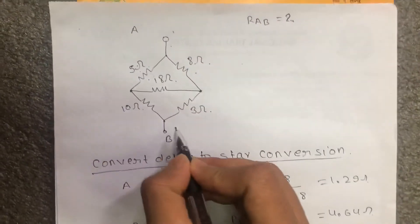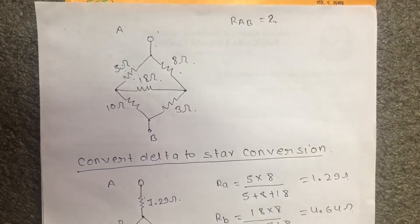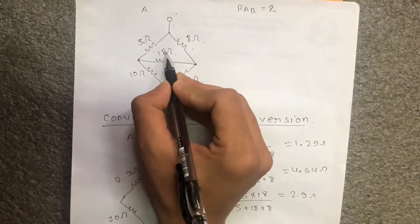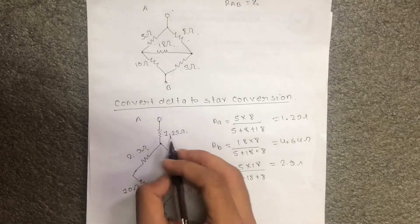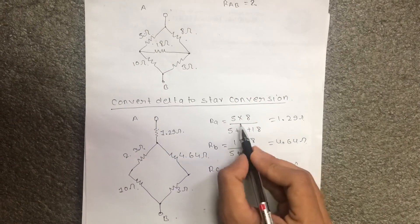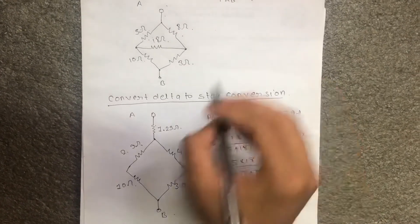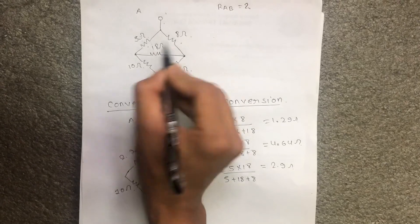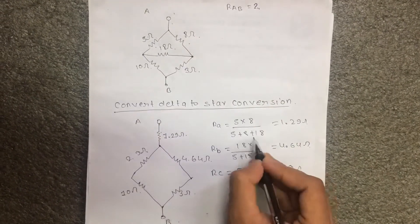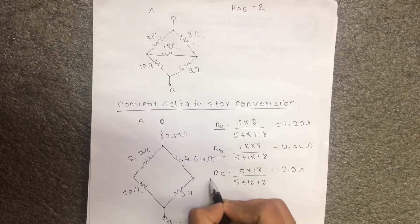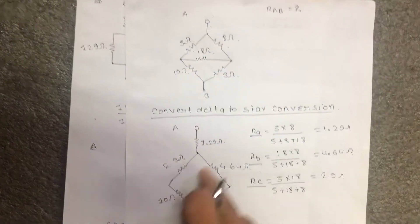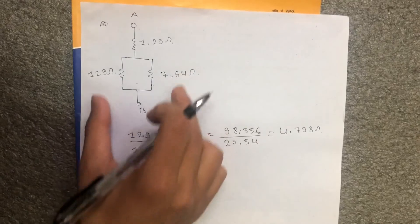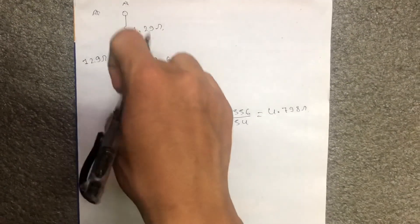This resistor is RAB. We will do this in a minute. Similarly this is delta. We will convert delta into star. This is the star. Then we will use the formula: 5 into 8 upon 5 plus 8 plus 16. We will divide this and add to the star. Then we will write this data — this is the parallel combination, and we will write the result accordingly.